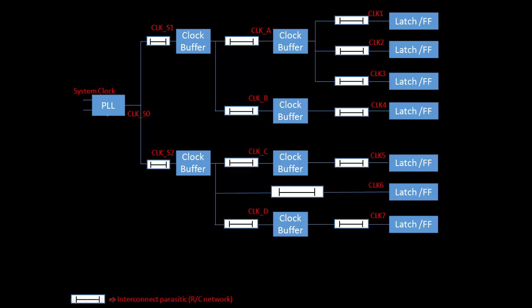PLL is here, and the output of the PLL is CLK_S0. This clock is divided into CLK_S1 and CLK_S2 as inputs to the clock buffers. This section is a representation of interconnect parasitics — the RC network. Instead of drawing resistance, capacitance, and whether it's a pi or delta network, I just draw this section to represent interconnect parasitics.